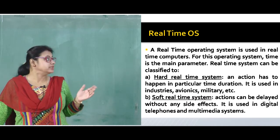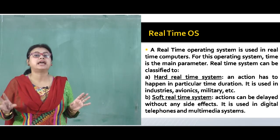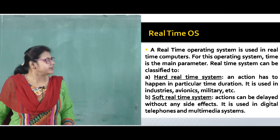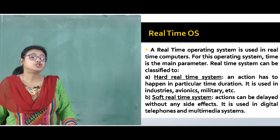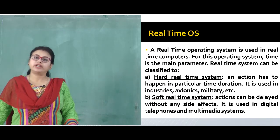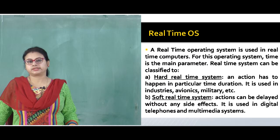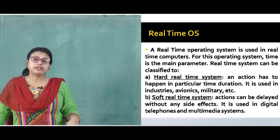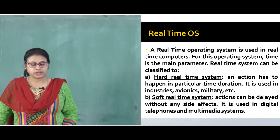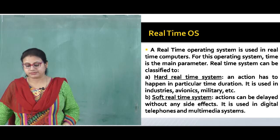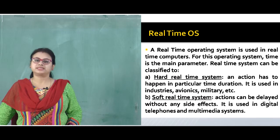In a hard real-time system, whenever the event is happening, it must capture different measurements at that time only. In soft real-time systems, actions can be delayed without any side effects — it is not necessary to sense activities at exactly the time the event happens. Soft real-time systems are used in digital telephones and multimedia systems.